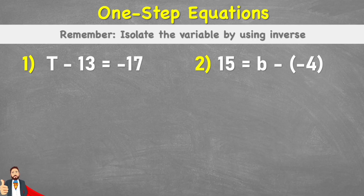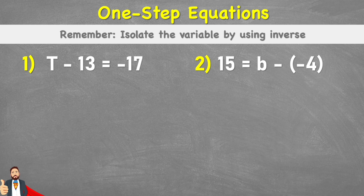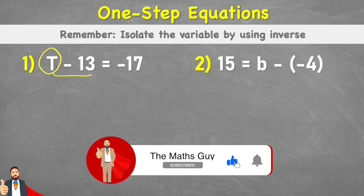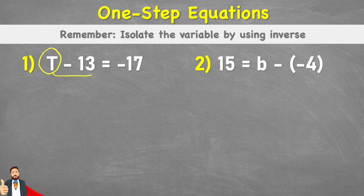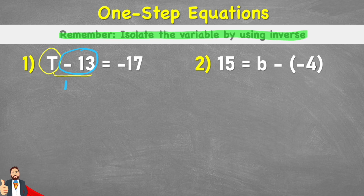So we can see that we have two examples here that we're going to look at today, and we can see that both of them involve variables — an unknown value — and negative numbers, as well as subtraction. So what are we trying to do when we're trying to solve a one-step equation? We want to get this variable on its own to understand the value of it. At the moment, this variable is connected to this subtract 13. So we need to find a way to get it on its own. We need to isolate the variable by using the inverse. So at the moment we have a subtract 13, and the opposite of subtraction is addition. So we need to put a plus 13 on this side.